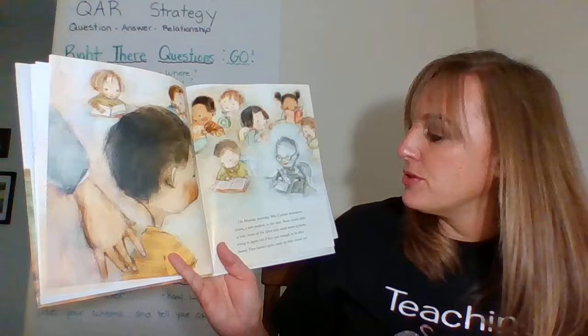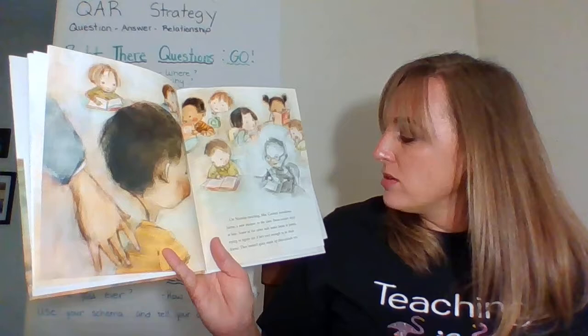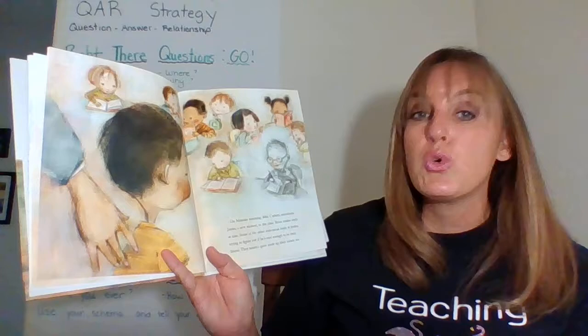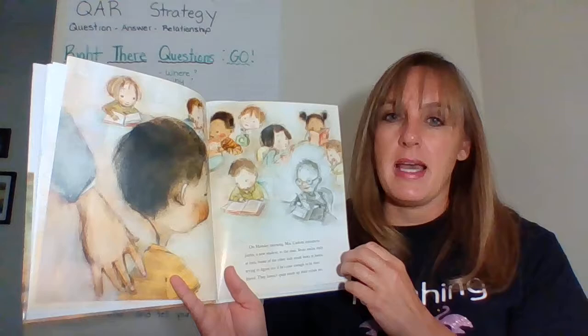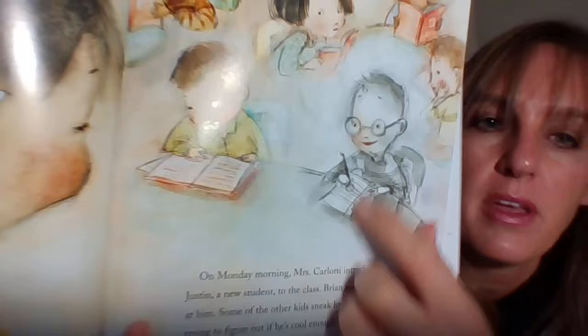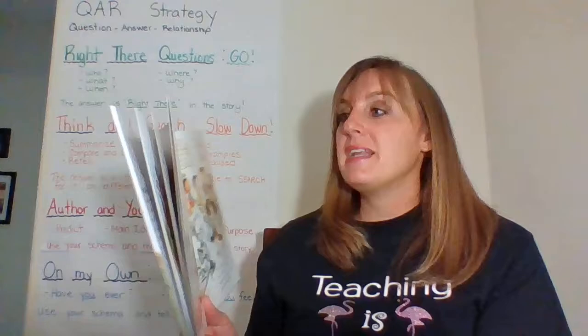On Monday morning, Mrs. Carlotta introduces Justin, a new student to the class. Brian smiles shyly at him. Some of the other kids sneak looks at Justin, trying to figure out if he's cool enough to be their friend — they haven't quite made up their minds yet. Look at Brian's face here — he's got a little bit of color. Something might be changing.